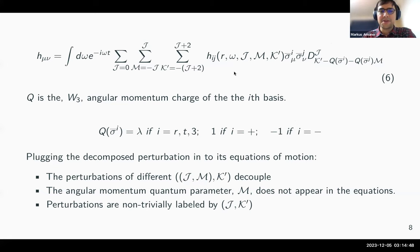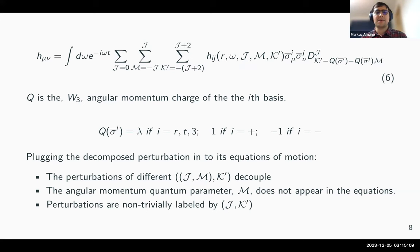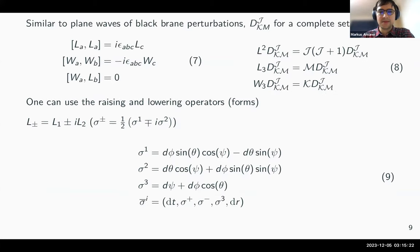This decomposition is special because perturbations of different angular momentum decouple from each other. You can also cleverly remove any dependence on the m angular momentum. So our perturbations are labeled by j and k-prime.